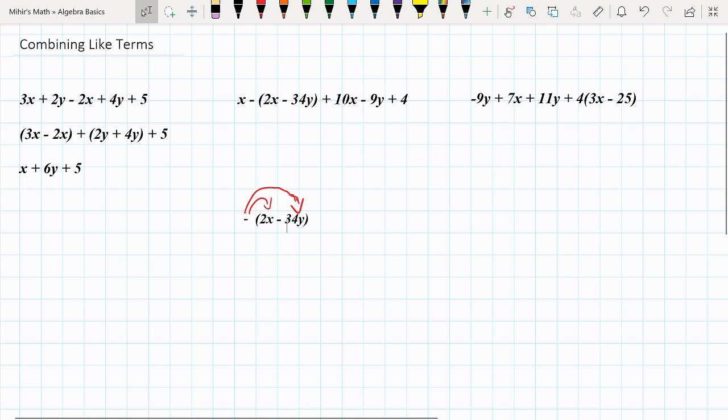So this would become: we would write this as negative 2x, as this negative was multiplied by a positive number, and positive times negative is a negative. And then a negative times a negative number would be positive. So we'd write plus 34y. And this is how we open the brackets.